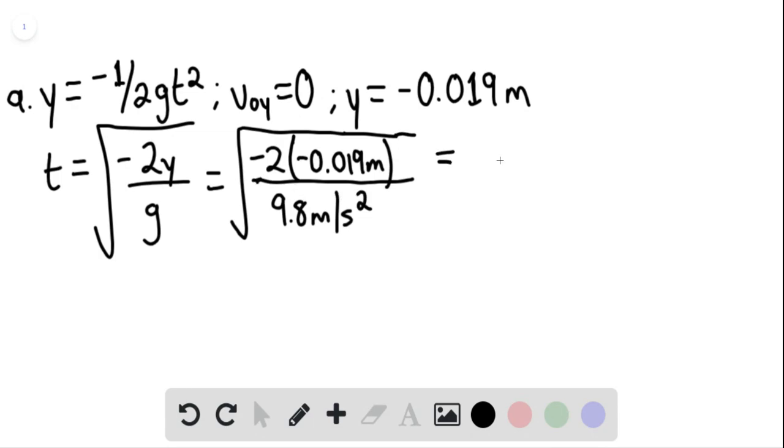And t is then equaling 6.2 times 10 to the negative second seconds. This would be our answer for part a.